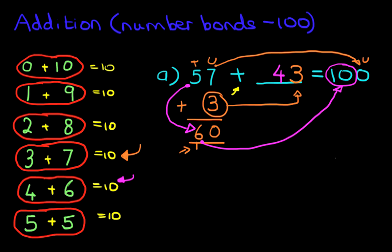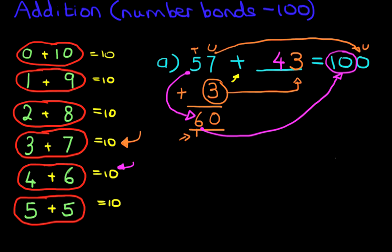So the number we were looking for was 43. Now, did you understand that? If not, it doesn't matter. We're going to go through one more example. This time, the missing number is at the beginning. We've got plus 38 equals 100.